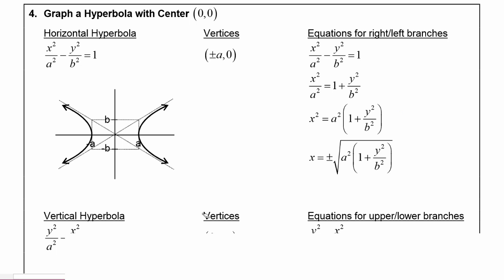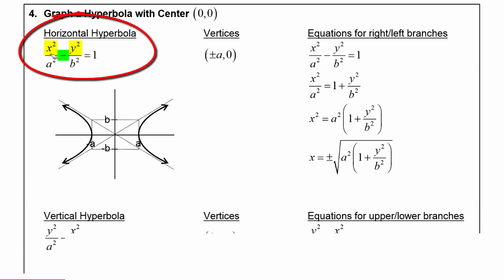First up we have a horizontal hyperbola whose equation looks like x² over a² minus y² over b² is equal to one. To recognize that this will be a hyperbola, both the x and the y will need to be squared and they will need a minus sign between them. If there was a plus sign between them then it would be an ellipse.